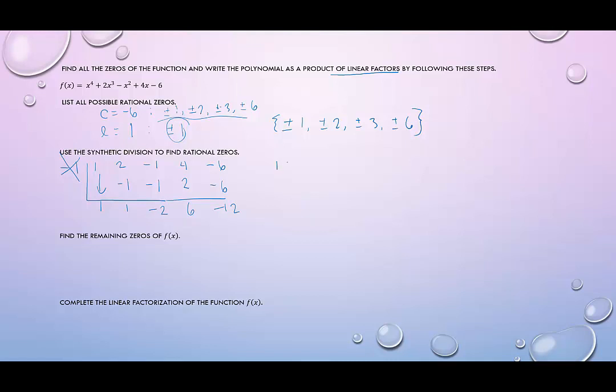So -1 is out. Let's try positive 1. And again, what we're going to do is we're going to list the coefficients and the constant of the given function. And we're going to try this again. Bring down the 1, 1 times 1 is 1, 2 plus 1 is 3, 3 times 1 is 3, -1 plus 3 is 2, 2 times 1 is 2, 4 plus 2 is 6, 6 times 1 is 6. Hey, -6 plus 6 is 0, hooray. So now we found one that worked. So we found at least one rational zero. Okay, success.